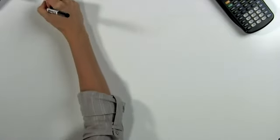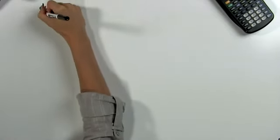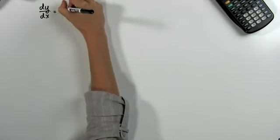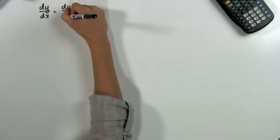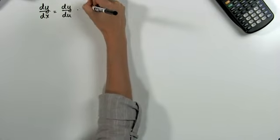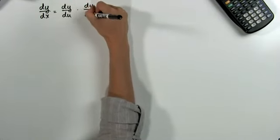We use the chain rule when we want to take the derivative of two functions one inside the other. The proper way to write the chain rule is the derivative of y with respect to x is equal to the derivative of y with respect to u times the derivative of u with respect to x.